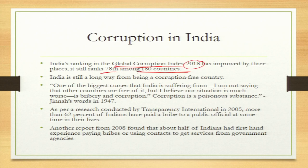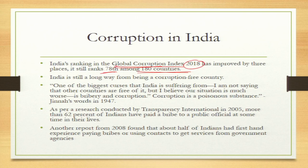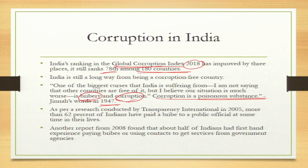One of the biggest curses India is suffering — these are the words of Muhammad Ali Jinnah. Jinnah considered that corruption is one of the biggest problems in India, one of the biggest curses — bribery and corruption. He further says corruption is a poisonous substance, like a poison which affects the entire society. These words from 1947 tell us that even at the time of independence, corruption was something very prevalent in India.